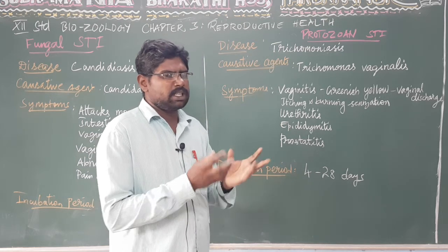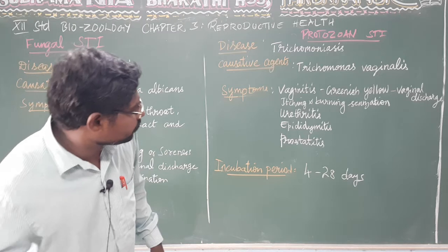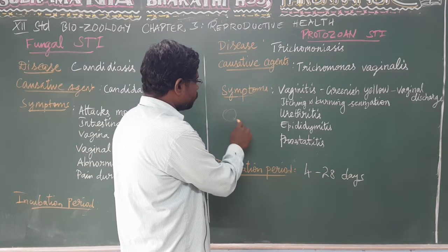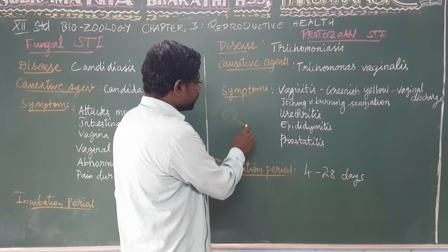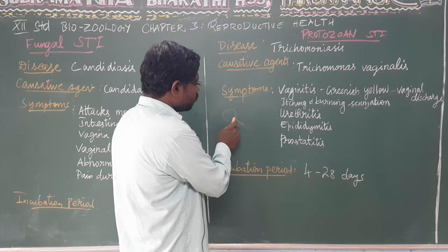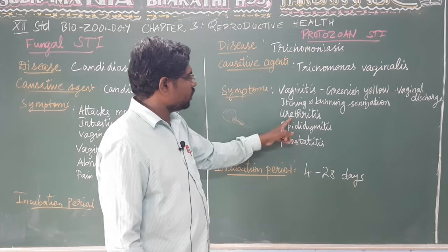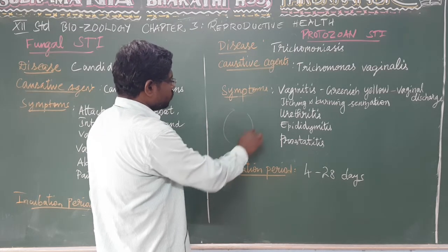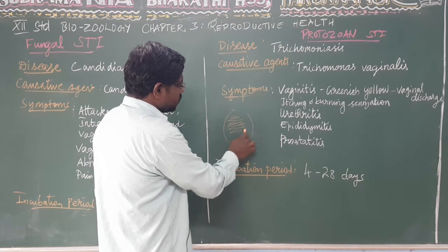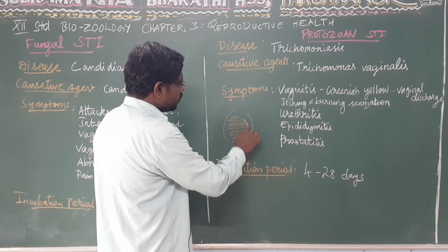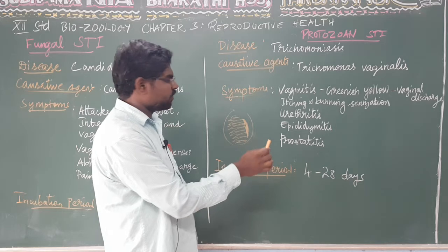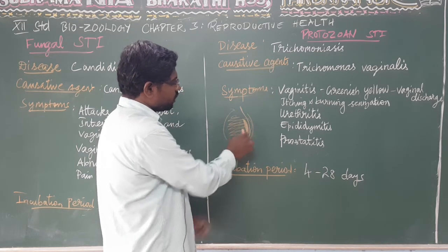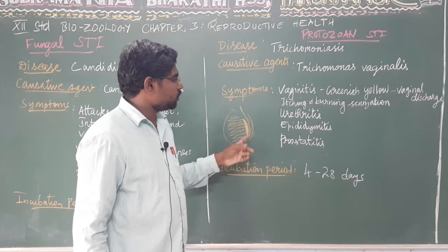Epididymitis is an infection of the epididymis. The epididymis is located near the testis in the scrotum and is the temporary storage site of sperm. If there is an infection in the epididymis, it is called epididymitis.